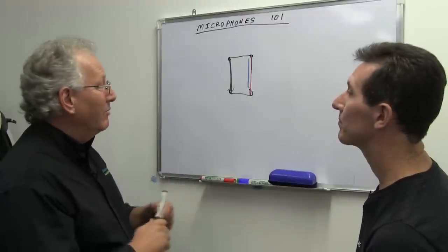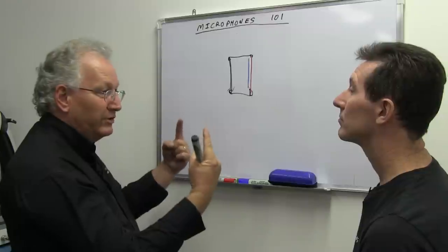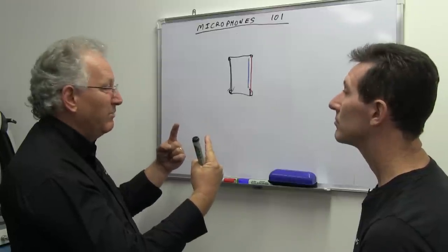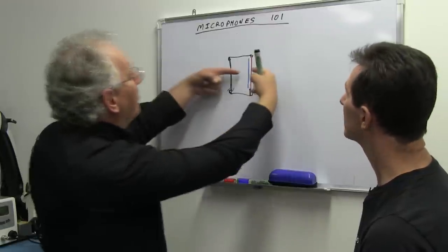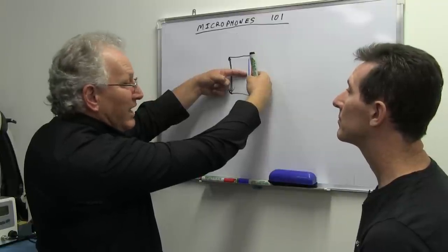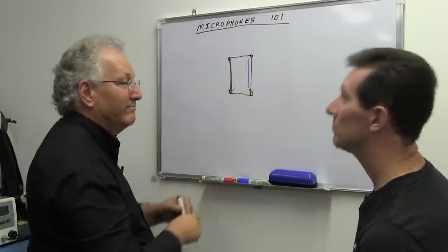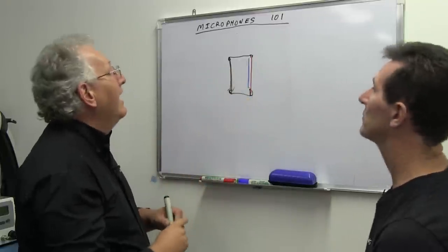With externally polarized, we're basically coming along with our own voltage that we've generated, somewhere between maybe 50 and 200 volts, applying that voltage to the plates so that they've got a big charge on them, and then sensing what happens to the charge, the differential charge on the plates.